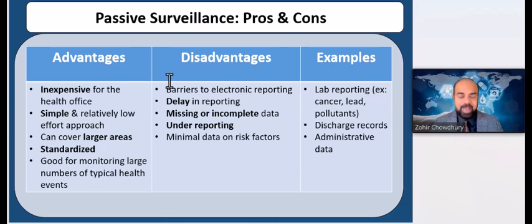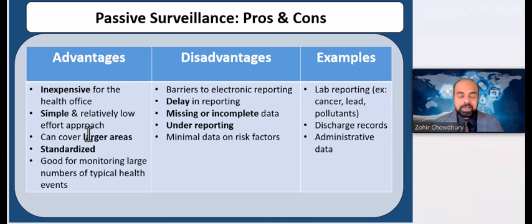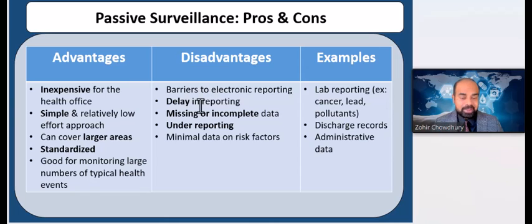Passive surveillance has many advantages, such as being low cost or inexpensive and engaging many potential observers. However, the geographic coverage is large and typically unknown, and the expertise among observers is highly variable. While passive reporting can be enhanced through public education and awareness campaigns, passive surveillance typically yields results that underestimate the severity of infestation and often fails to identify invasions in a timely manner. There is also delay in reporting and barriers to electronic reporting in many countries.